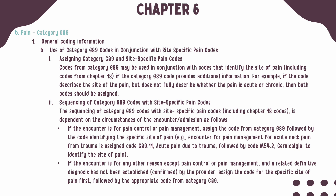When assigning codes from Category G89 in conjunction with other chapters, you want to make sure that you only use a code from Category G89 if it can provide additional detail that your other chapters do not. For example, if your code describes the site of pain but does not include information on whether that pain is acute or chronic, then a code from Category G89 can be assigned.